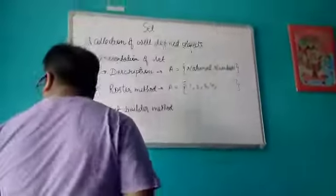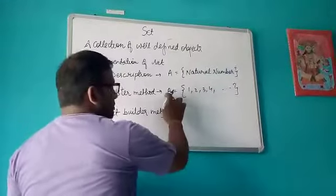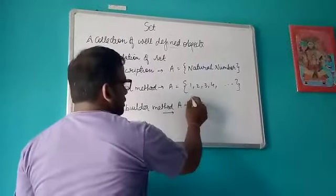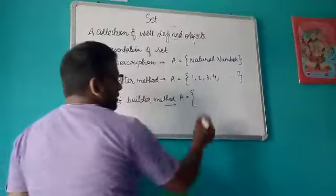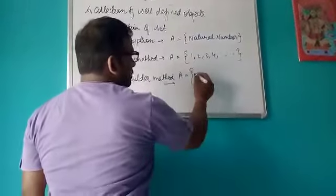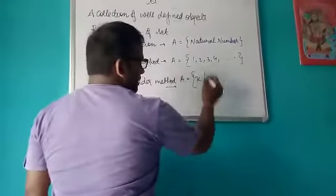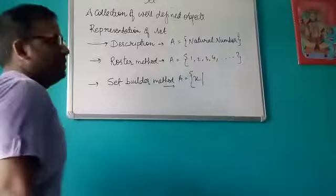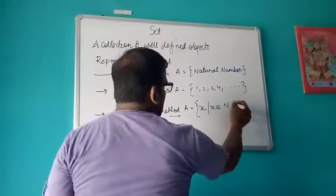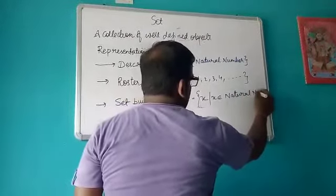Next is the set-builder method. If a set is given, you write it in general form as: x such that x belongs to natural numbers. You can write 'belongs to natural numbers' in full or in short notation.